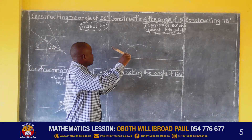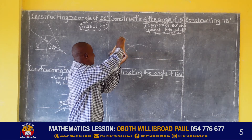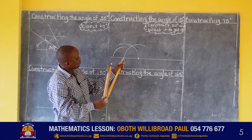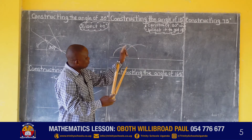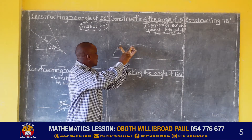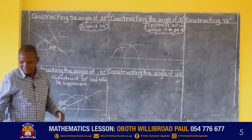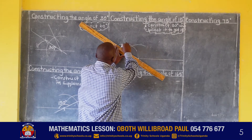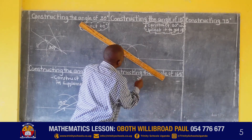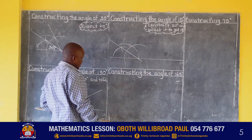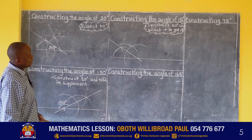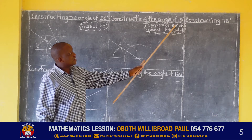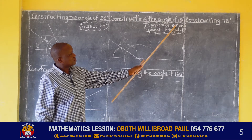You are now seeing what I'm doing. I have put my compass pointer here to make that arc. Then I'm putting it also there to create that arc. That means when we carefully join, the angle that we have here is the same as this one, which is 30 degrees. But remember, to get 15, we said we bisect 30. Bisecting means we divide 30 into two equal parts. When we divide 30 by two, we get 15.